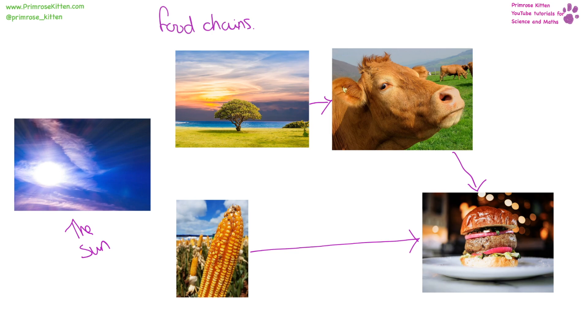The direction of the arrow is really important in food chains. The direction of the arrow means 'eaten by.'